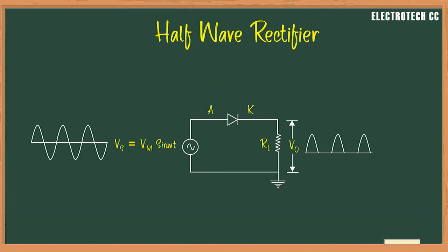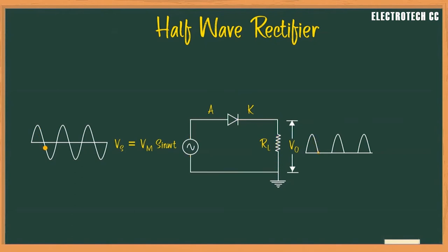In the half wave rectifier, the AC power supply is connected to a resistive load through a single diode. In the positive half cycle of the input AC voltage, the diode is in forward bias, so it turns on and conducts. The diode acts as a short circuit so that current flows, and hence the positive half cycle of the input AC voltage is dropped across the resistive load RL.